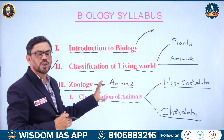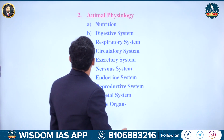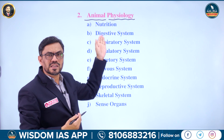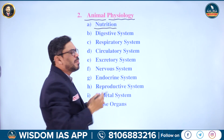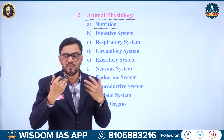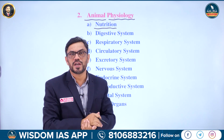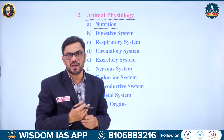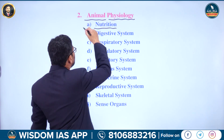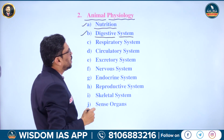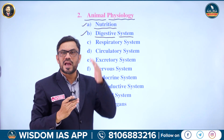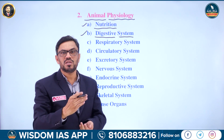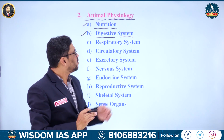The next topic in the zoology part is animal physiology. Physiology means the study of metabolism. In this physiology part, we have various organ systems, starting from nutrition. Nutrition means the intake of nutrients — substances required for growth, development, and energy production. How these nutrients have been classified can be discussed in the nutrition topic. The second topic is the digestive system, where we discuss the anatomy of the digestive system, the structures involved, and the process of digestion — the conversion of complex food substances into simple forms.